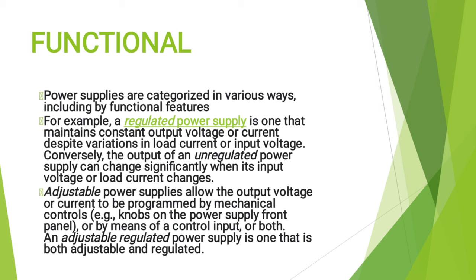Adjustable power supplies allow the output voltage or current to be programmed by mechanical controls — for example, knobs on the power supply front panels — or by means of a control input, or both. An adjustable regulated power supply is one that is both adjustable and regulated.